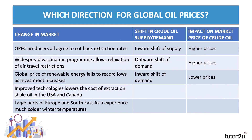Number four: improved technologies lower the cost of extraction of shale oil in the United States and Canada. I think that's going to be an outward shift of supply — it's now cheaper to extract the oil and bring it to refining. An outward shift of supply should normally lead to a lower price.